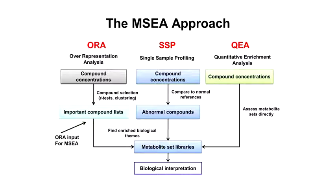ORA, SSP, and QEA are handled through three different methods. With over-representation analysis there's no compound concentration involved — it's essentially using a t-test to assess which compound lists are unusually high for given pathways or conditions. Compound concentrations in SSP are compared to normal references for humans from a variety of clinical samples and from the Human Metabolome Database. The quantitative enrichment set looks through a whole range of preassembled metabolite set libraries, and the output is some kind of general biological interpretation.